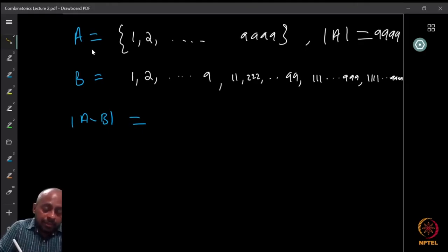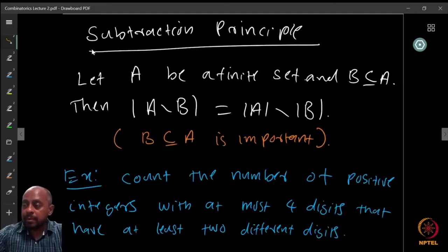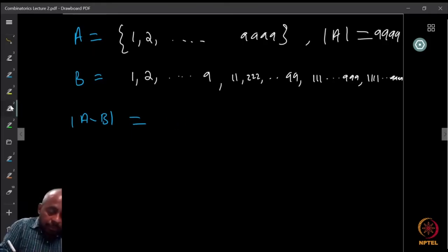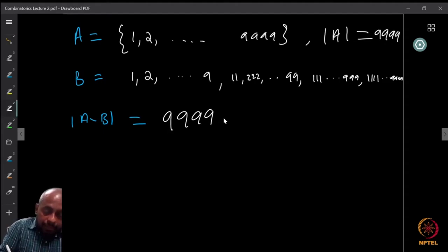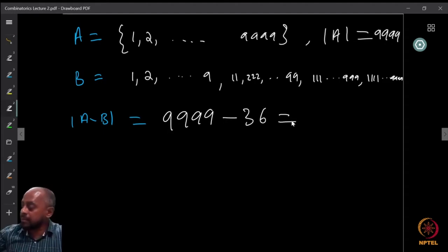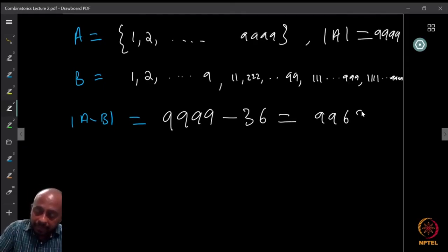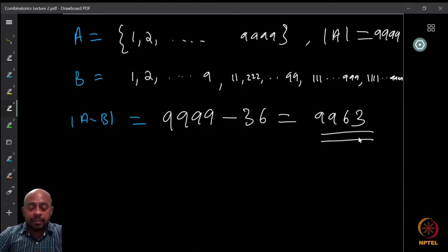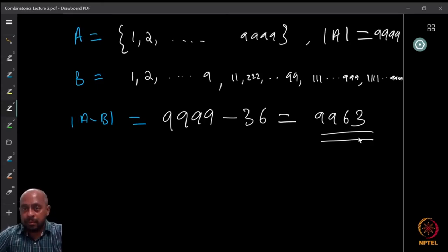Therefore the cardinality of A minus B — the numbers with at most four digits having at least two different digits — is 9999 minus 36, which equals 9963. We used the subtraction principle here, and as you can verify, this is much more efficient than counting directly.